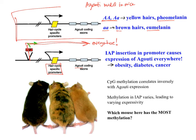The consequence of expressing agouti everywhere in the body is that these agouti mice have obesity, diabetes, and a predisposition toward cancer. Interestingly, CpG methylation inversely correlates with agouti expression — if we have increased methylation, we have decreased agouti. Within a population of mice, you can have variation in the methylation of the IAP promoter leading to varying expression.